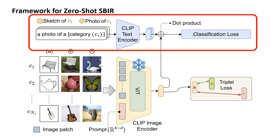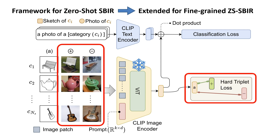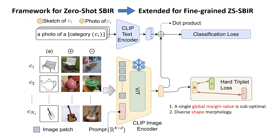Extending this to the fine-grained setup, the necessary modification is to replace the category-level triplets with hard triplets, where the negative instance comes from the same category. However, there are two major bottlenecks. First, the category-specific margin hyperparameter of the triplet loss varies significantly, showing that a single global margin value alone is suboptimal for fine-grained retrieval. Second, due to the diverse shape morphology amongst various categories, it becomes extremely challenging to recognize fine-grained associations for unseen classes whose shape is unknown.